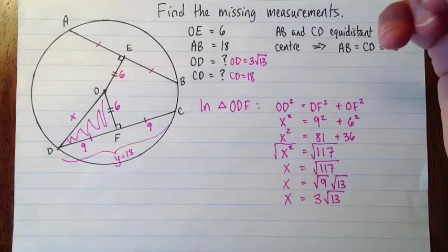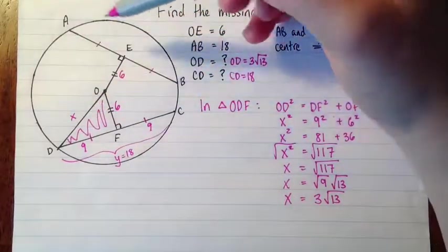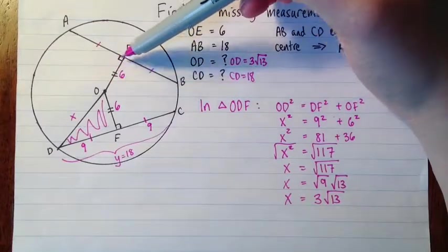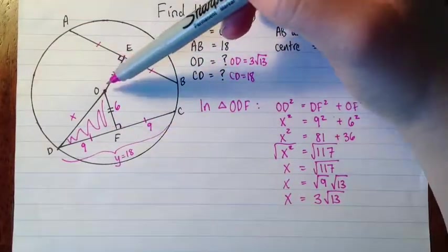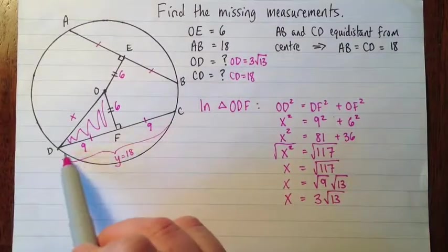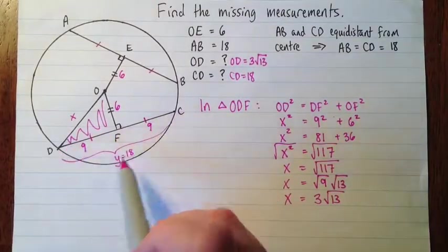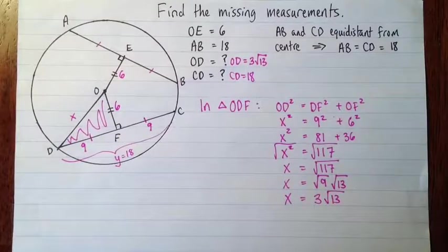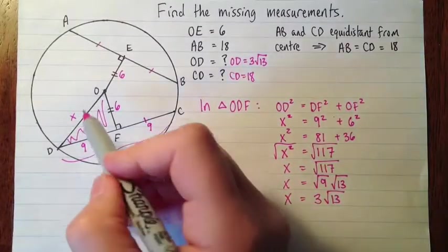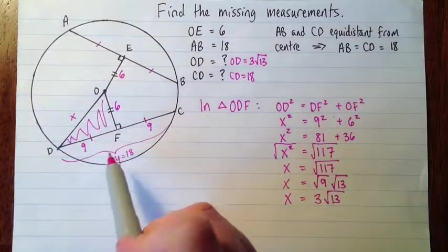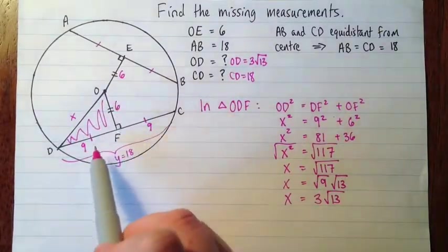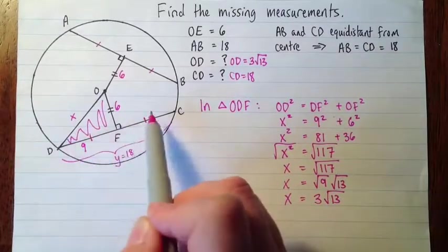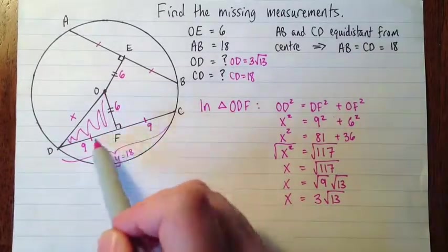Here are the key parts of that question. So we had to remember the chord properties. First thing, chords that are equidistant from the center are the same length. So right away, without doing anything really, we could tell that CD was 18 just because AB was. And then we didn't have to construct any lines in this. We didn't have to draw in any radii. We just had to remember another chord theorem that says because OF is perpendicular to DC and it passes through the center, it bisects DC.